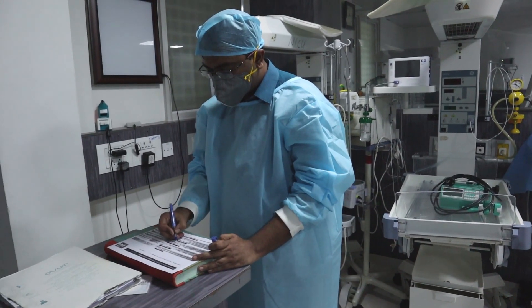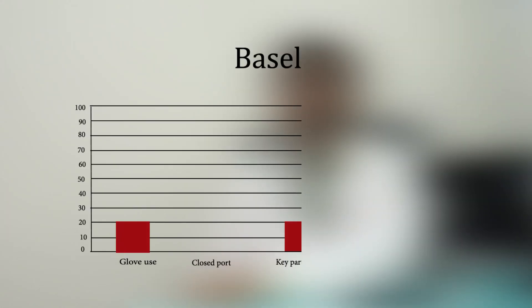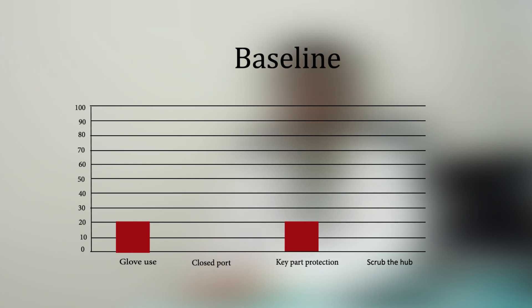We did an audit in our unit based on aseptic non-touch technique principles and observed that there was only 20% usage of glove as well as 20% protection of key parts, while closed port usage and scrub the hub was non-existent.